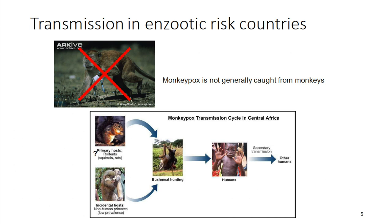Humans can be exposed either through contaminated environments, through rodent excreta, or through direct contact with animals — so hunting them, butchering them, etc. And then we can see secondary transmission between humans once the virus has entered a human population.